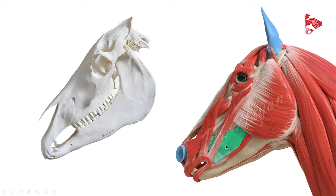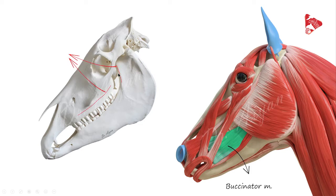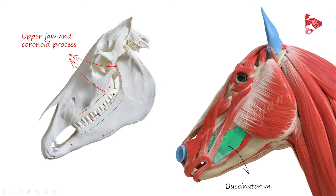The next muscle highlighted in green is the buccinator muscle. The buccinator muscle usually has two parts: the molar and buccal parts. This muscle originates from two areas — the first is the cranial surface of the coronoid process of the mandible.